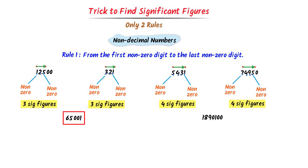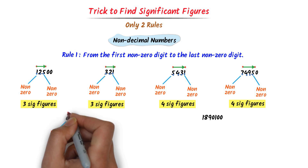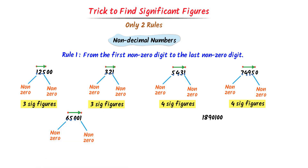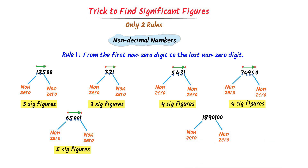In case of the fifth number, I go from the first non-zero digit to the last non-zero digit. The first non-zero digit is 6 and the last non-zero digit is 1. I go from 6 to 1: 1, 2, 3, 4, 5. There are 5 digits or 5 significant figures. In the last number, the first non-zero digit is 1 and the last non-zero digit is also 1. I go from this 1 to this 1 and count: 1, 2, 3, 4, 5. There are 5 significant figures present in this number.